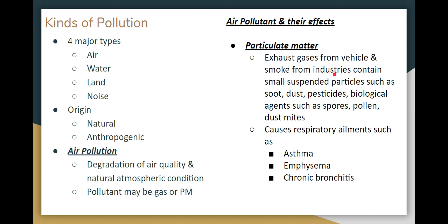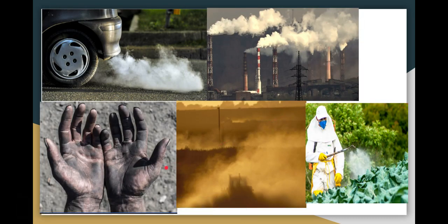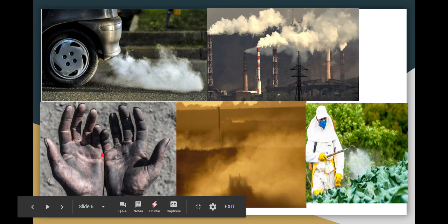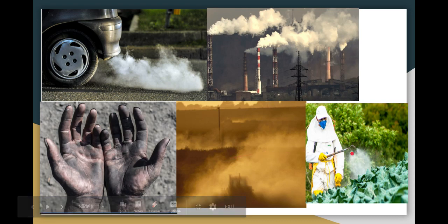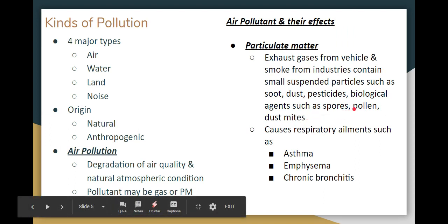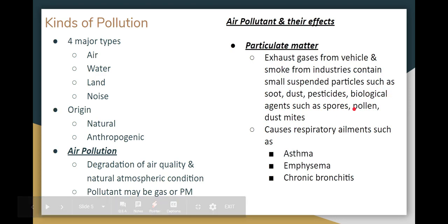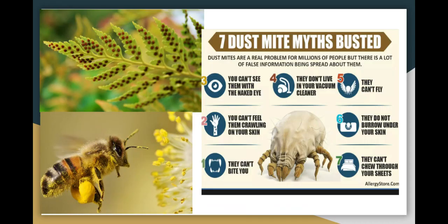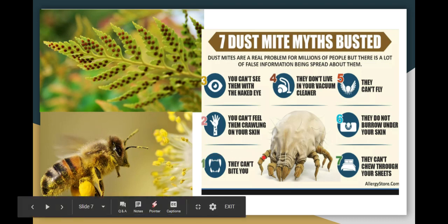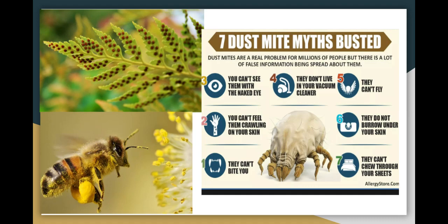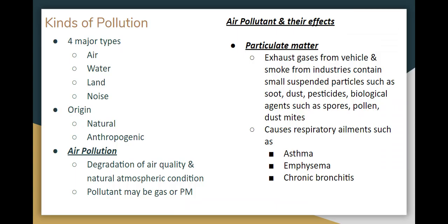Under gas and smoke, there are small suspended particles such as soot, dust, and pesticide. Soot is the black color material from coal mines. There are also natural biological agents such as spores, pollen grains, and dust mites. Dust mites can be found in your bed and on your skin — these are all forms of air pollution.